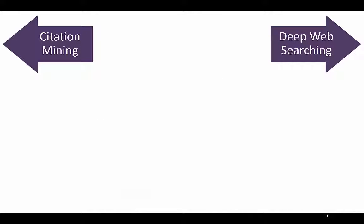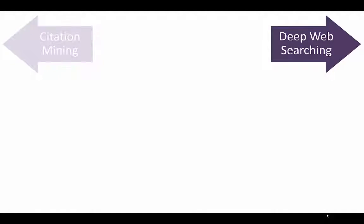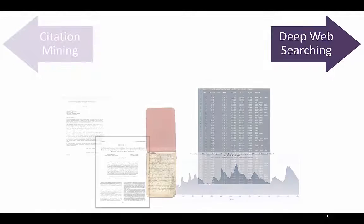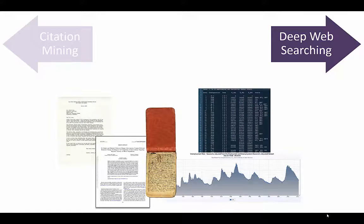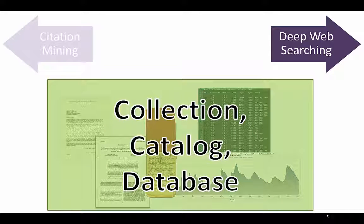Sometimes, though, I might want to look for primary sources that others didn't use. In order to do so, I will have to use deep web searching. Primary sources are often held in digital collections, library catalogs, or proprietary databases.